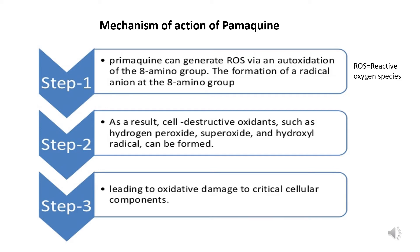The mechanism of action of primaquine is divided into three steps. In step 1, primaquine generates reactive oxygen species by auto-oxidation of the 8-amino group, causing formation of free radical anions. In step 2, this free radical generation forms cell-destructive oxidants such as hydrogen peroxide, superoxide, and hydroxyl radicals. In step 3, these free radicals cause oxidative damage to the cellular components of the malarial parasite, killing it.